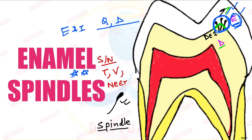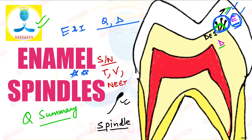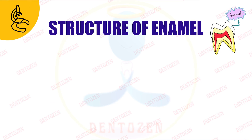You will get all the details from all the important textbooks of dental histology, along with a quick summary of this topic at the end of the video — everything at one place on Dentozen. Don't forget to subscribe to Dentozen and tap on the like button. Now, enamel spindles can come as a part of your long question when you are asked about the structure of enamel in detail.